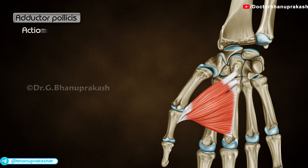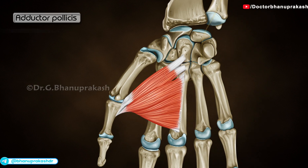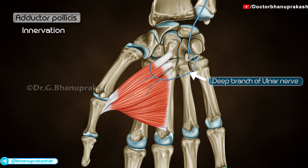Its action is adduction of the carpometacarpal joint of the thumb. It is innervated by the deep branch of the ulnar nerve.